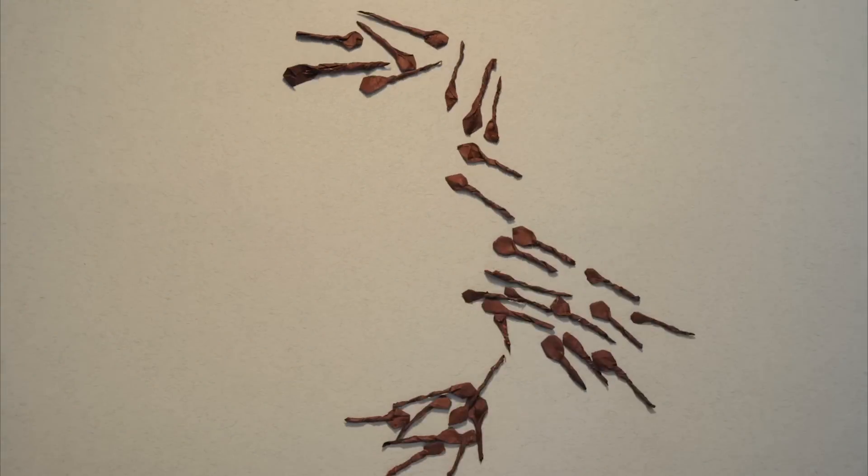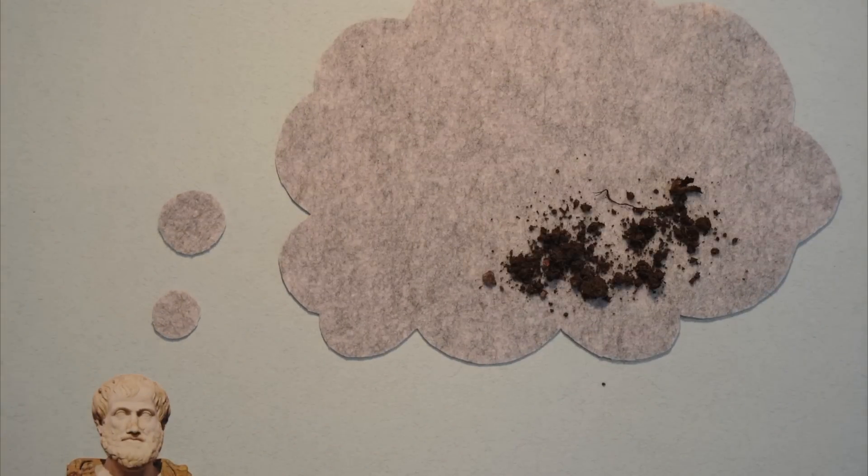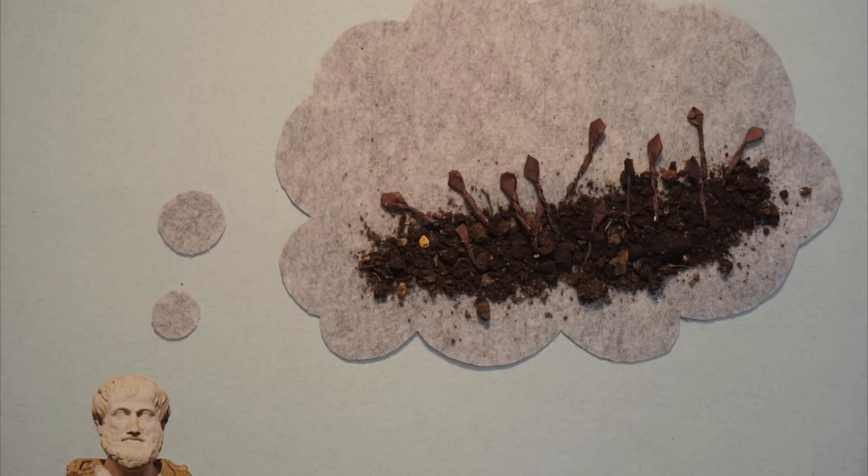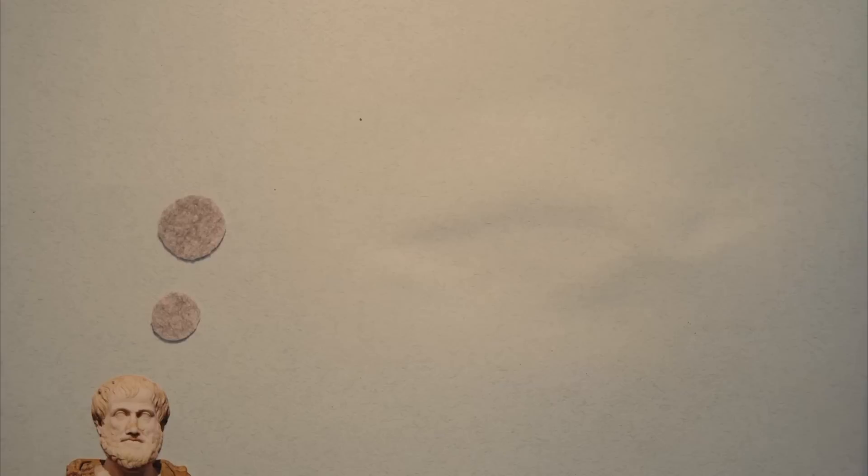For centuries, people have wondered where European eels come from. Aristotle thought eels emerged from the mud, declaring: Eels are derived from the so-called Earth's guts, they grow spontaneously in mud and in humid ground.